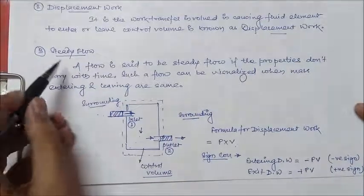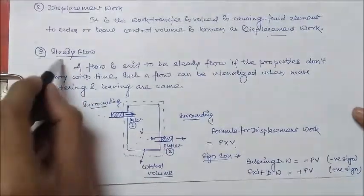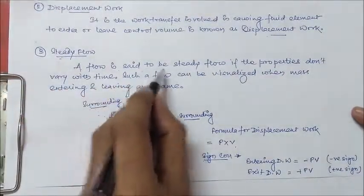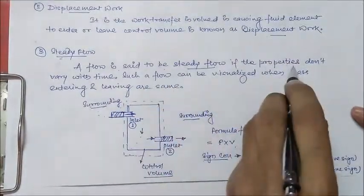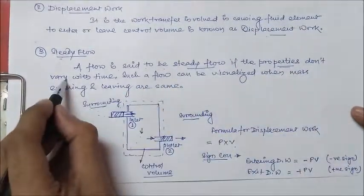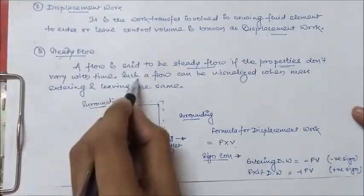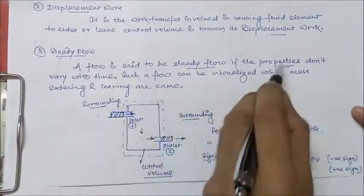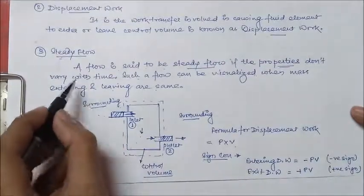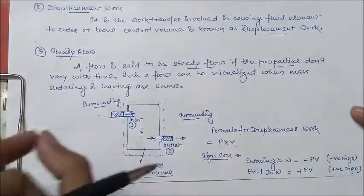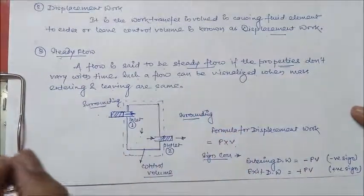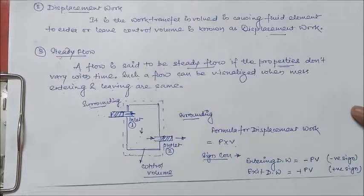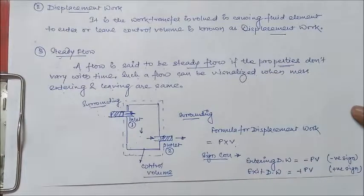Now our third point is steady flow. A flow is said to be a steady flow if the properties don't vary with time. Such a flow can be visualized when the mass entering and the mass leaving are the same with respect to time — then the flow is said to be a steady flow.